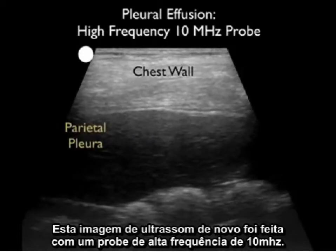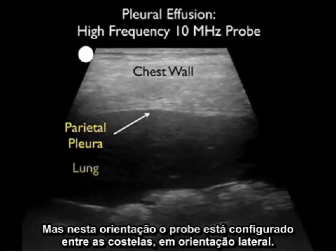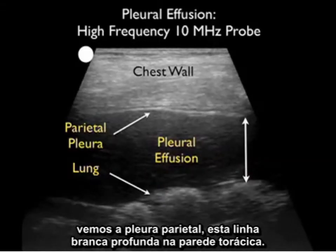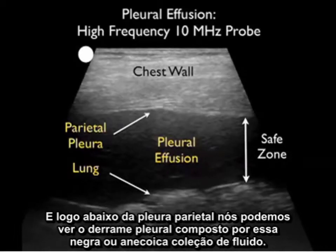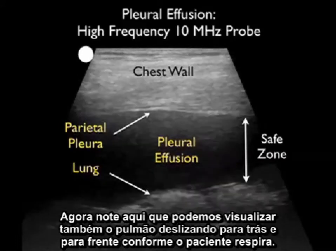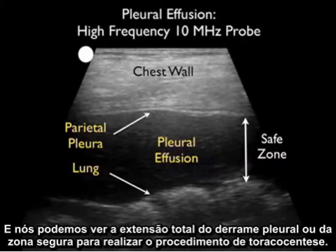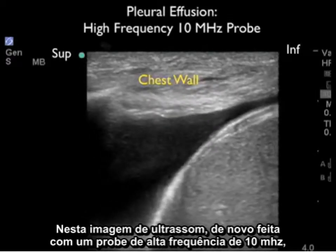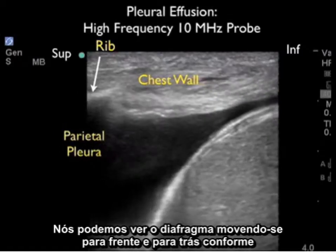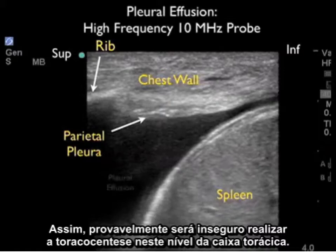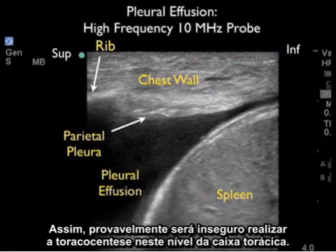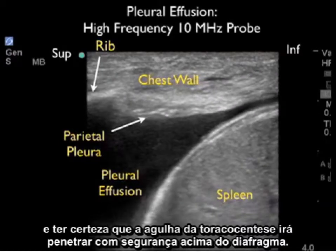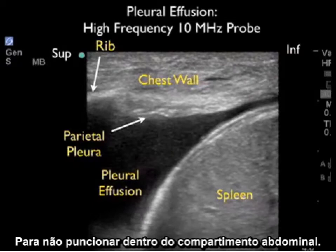This ultrasound image is again taken with a high-frequency 10 megahertz probe, but with the probe configured between the ribs in the lateral orientation. We see the chest wall anteriorly, the parietal pleura as a white line deep to the chest wall, and just deep to the parietal pleura the pleural effusion as a darker anechoic collection of fluid. We can also see lung sliding back and forth as the patient breathes, and the full extent of the pleural effusion defines the safety zone for thoracentesis. In the next image, we can see the diaphragm moving back and forth as the patient breathes, defining the lower aspect of the thoracic cavity. It would be unsafe to perform a thoracentesis at this level, as we might go through the diaphragm and into the spleen. So it's important to confirm the level of the diaphragm and ensure the thoracentesis needle goes safely above it, not into the abdominal compartment.